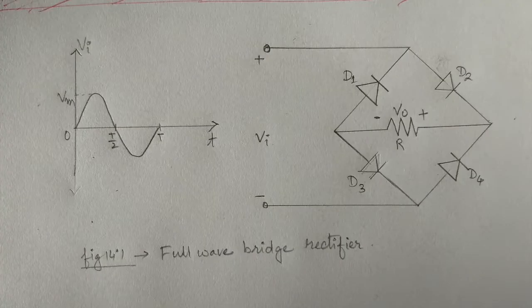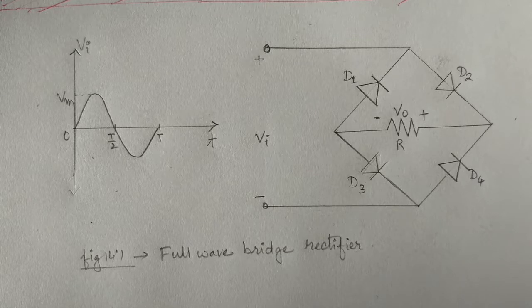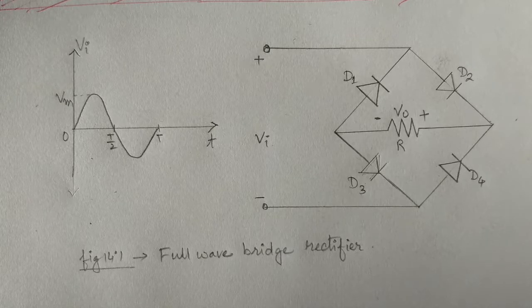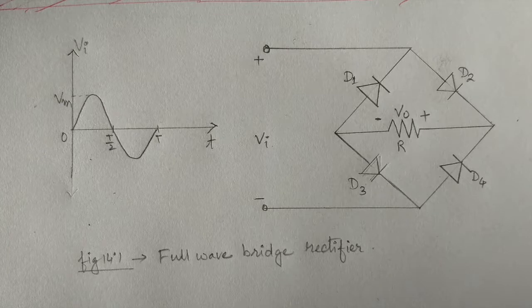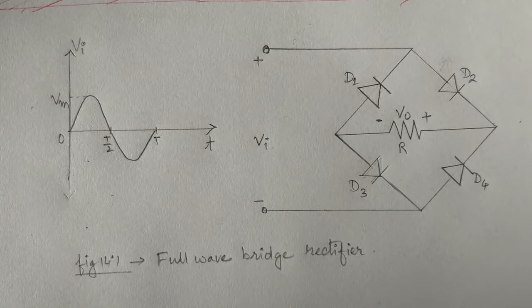A full wave rectifier is a circuit arrangement which makes use of both the half cycles of input alternating current and converts them to direct current.